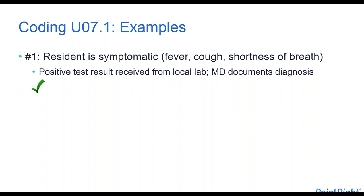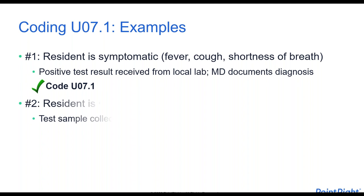Let's look at a few examples. First, a resident in the facility is symptomatic for COVID-19 — fever, cough, shortness of breath — and there's a positive test result from the lab. The physician documents the diagnosis. In this case, you would code U07.1 because you have both the positive results and the physician's documentation.